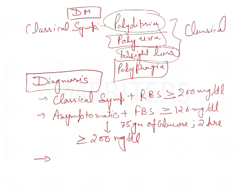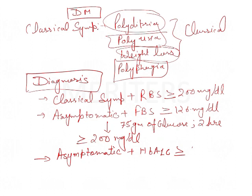Another very important and dependable test is HbA1c — glycosylated hemoglobin. If the patient is asymptomatic and HbA1c is more than or equal to 6.5 percent, then the patient is said to be diabetic.